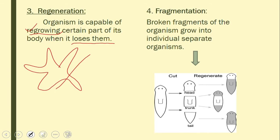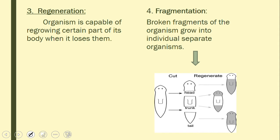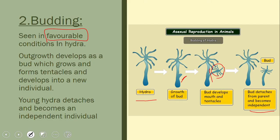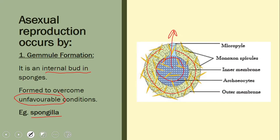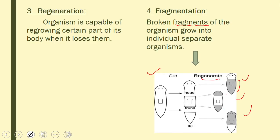Then there is fragmentation — as the name suggests, the body breaks into fragments and those fragments develop into new organisms. Planaria is a good example, as it shows both fragmentation and regeneration: pieces break off, and each fragment regenerates into a complete organism. So these are the four asexual methods: gemmule formation, budding, regeneration, and fragmentation.